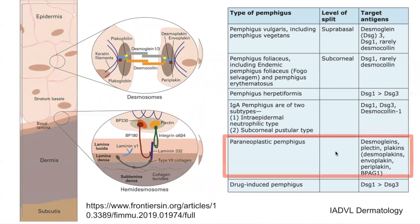In paraneoplastic pemphigus, the target antigens include Desmocollin, Plectin, Plakins, Desmoplakins, Envoplakin, Periplakin, as well as Bullous Pemphigoid Antigen 1, which is a component of the dermal-epidermal junction hemidesmosomes. For paraneoplastic pemphigus, it is the Plakins which are more specific to this condition, and we'll speak more about this in a later slide.